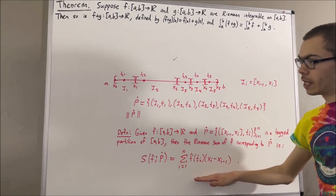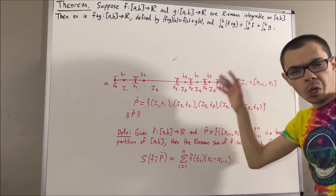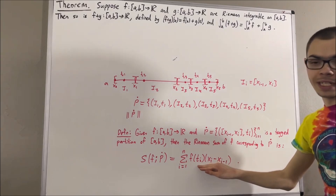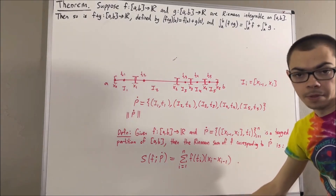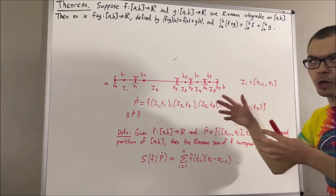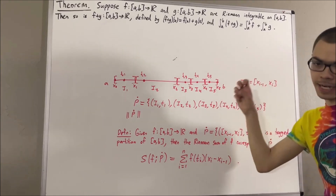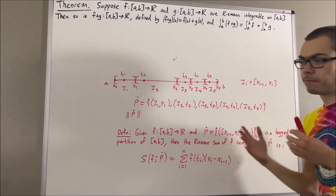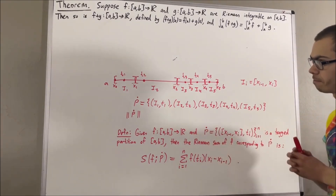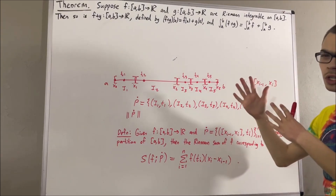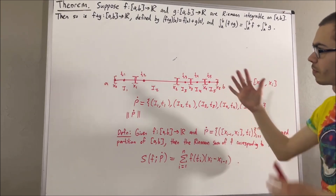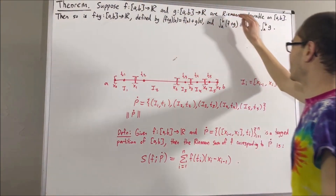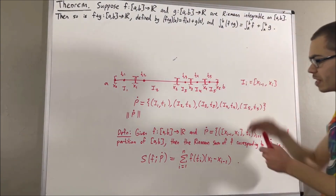If our function dips below the x-axis, there is a possibility that the output value at one of the tags is negative, so we can interpret the area of that rectangle as negative. That's what the Riemann sum tells us. Now let's talk about the definition of the Riemann integral — what does it mean to say that f and g are Riemann integrable on [a, b]?